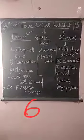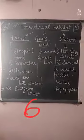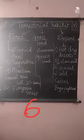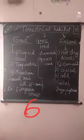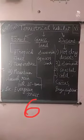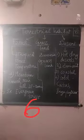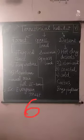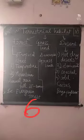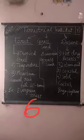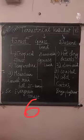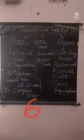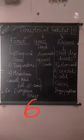Good morning children. In the last class we studied about aquatic habitat. Next one is terrestrial habitat. What is meant by aquatic habitat? The areas permanently covered by water are said to be aquatic. Terrestrial means the areas that are covered by land — if an area is covered by land, it comes under terrestrial habitat.